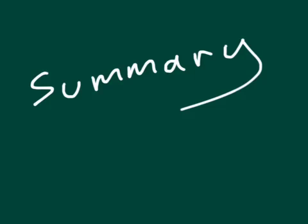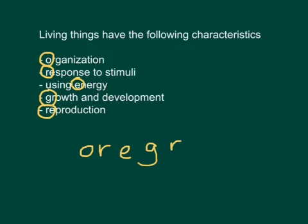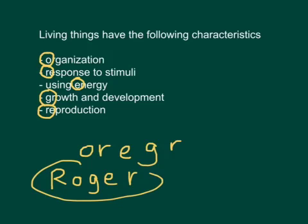We can summarize all of these ideas as follows. Living things have these characteristics: they show organization, especially being made of cells; response to stimuli to maintain life-giving conditions; they use energy; they grow and develop; and they reproduce, producing offspring. If we look at the first letters of these key words we have O, R, E, G, and R. An easy way to remember these is to rearrange them to the boy's name Roger. So if you remember Roger, you should remember these five key characteristics of living things.